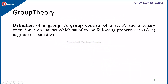Coming to the group theory, definition of a group: a group consists of a set and a binary operation. The binary operation is represented by a composition, and this operation could be addition, subtraction, multiplication, division, or any operation defined by the user on that set, which satisfies the following properties. The set A with the operation composition is a group if it satisfies closure — that is, for all a, b belonging to A, a composition b should also belong to the set A.